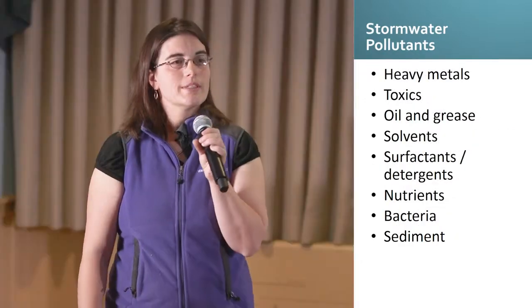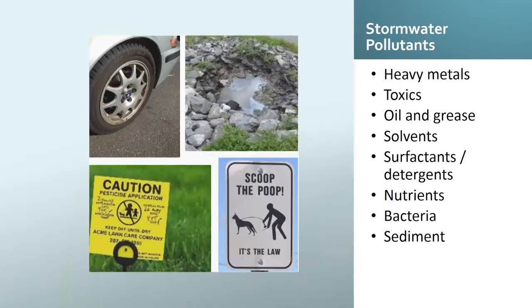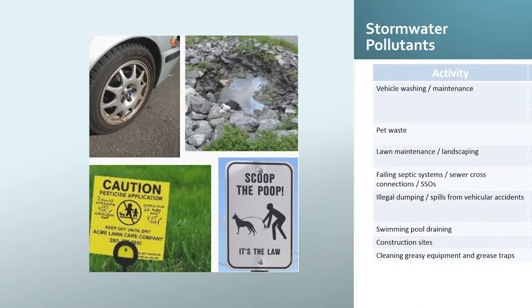What type of stormwater pollutants are we looking at in illicit discharges? You could have heavy metals, toxics, oils and greases, solvents, detergents, nutrients, bacteria, and sediment — a wide range of pollutants, basically anything that is found in polluted stormwater.